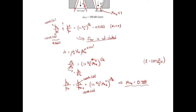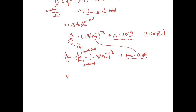Now that we know the exit Mach number, we can find the exit density. Substituting into the isentropic stagnation density ratio gives ρe = 1.335 kg/m³. To get the exit velocity, we multiply the exit Mach number by the speed of sound at the exit, where the speed of sound equals √(k·R·Te).